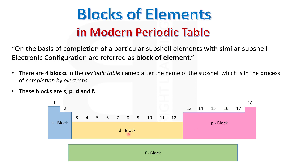D block lies in the center of S block and P block. As you know, D subshell can accommodate 10 electrons. Similarly, D block has 10 groups, starting from group number 3 and ending at group number 12. Moreover, D block constitutes period number 4, 5, and 6.